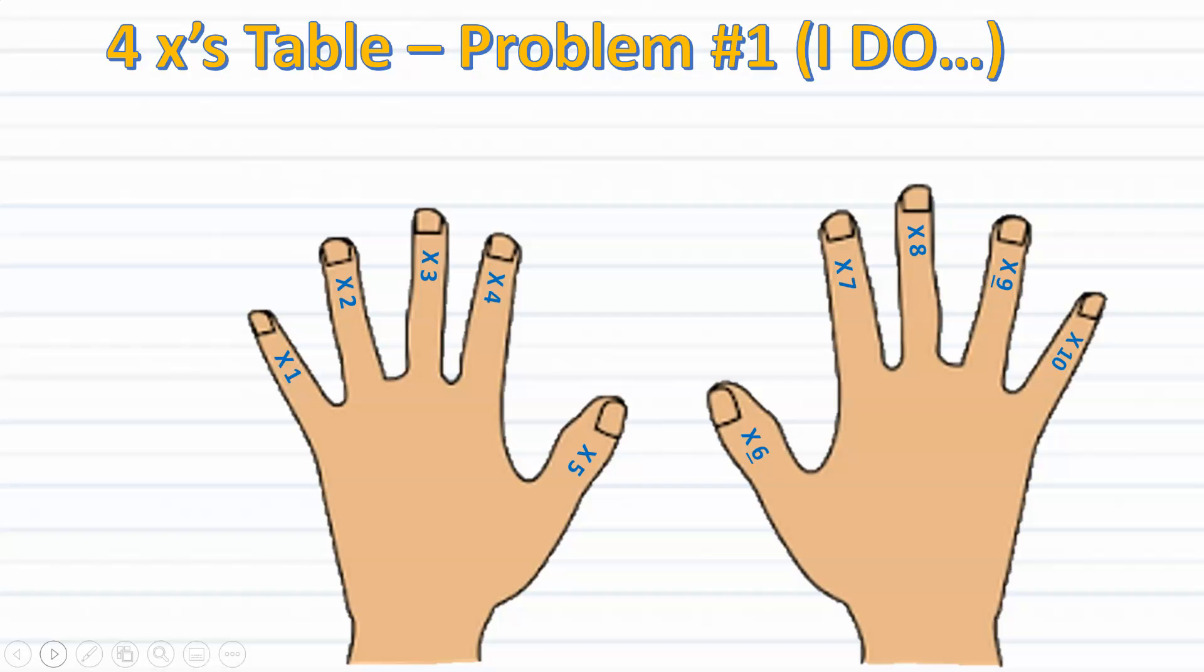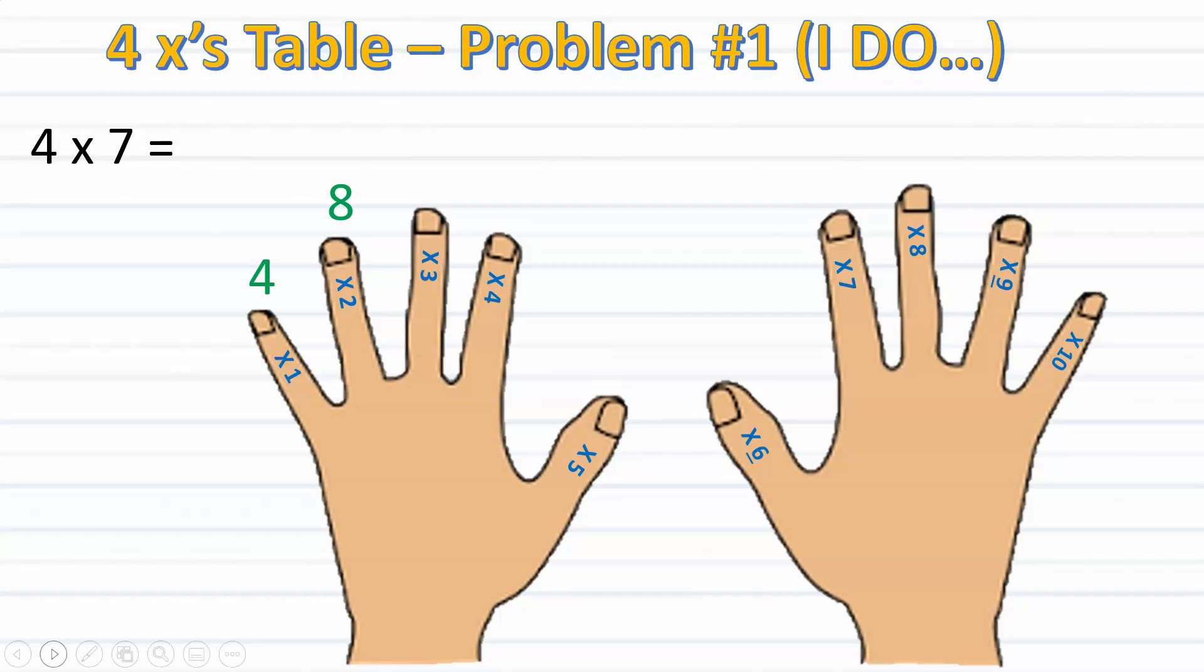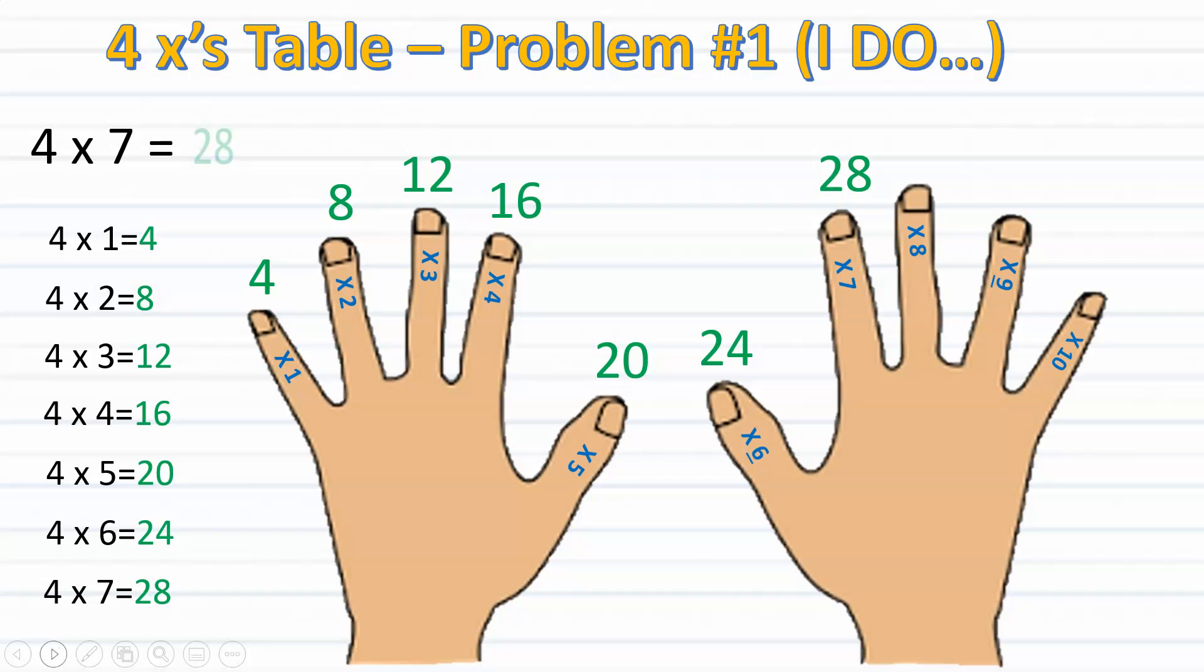For the first problem, I will model for you how to use the skip counting song to solve for 4 times 7. Since I'm multiplying 4 times 7, I have to remember that as I sing, I will stop once I reach the 7th finger. So follow along as I sing. 4, 8, 12, 16, 20, 24, 28. I'll stop here at 28 since it's my 7th finger. So therefore, I know that 4 times 7 equals 28.